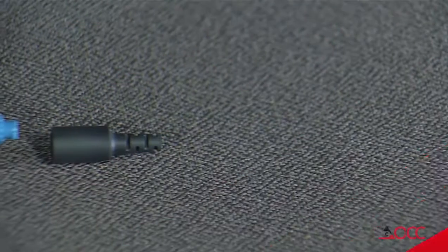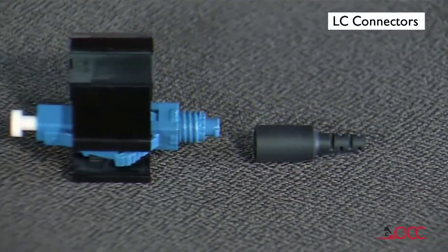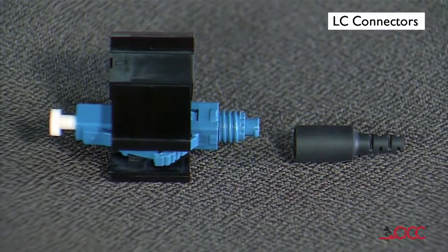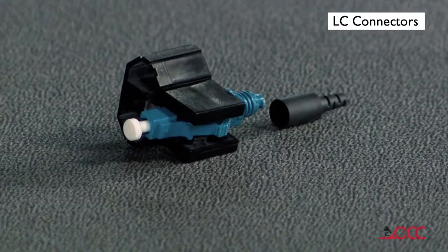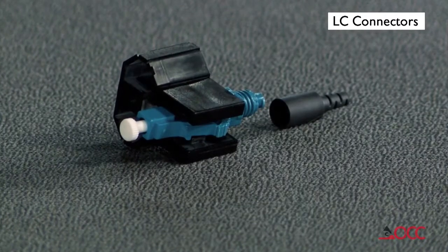The wedge clip is engaged at shipment. If it has become dislodged, squeeze the top and bottom of the wedge clip, ensuring it is inserted into the connector body. A click will be heard.